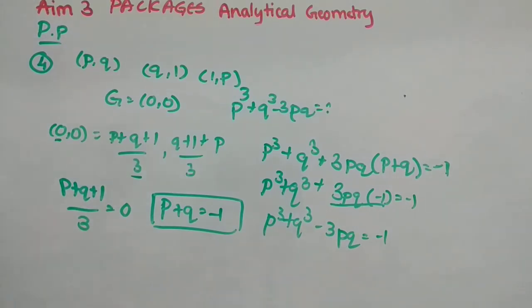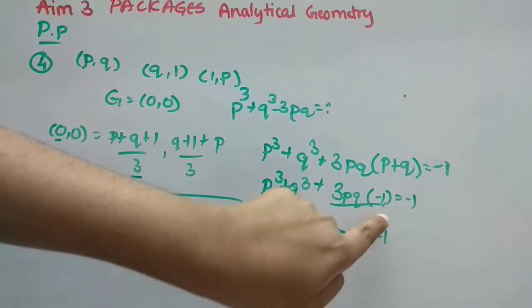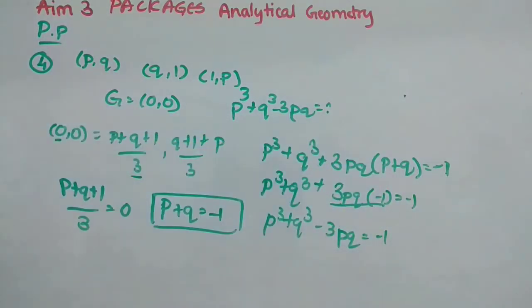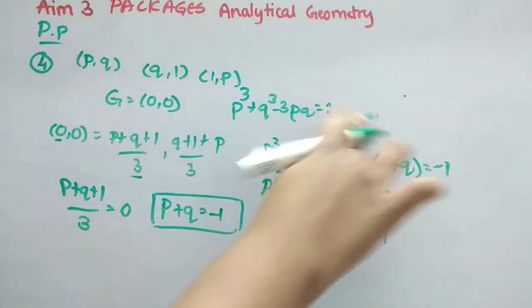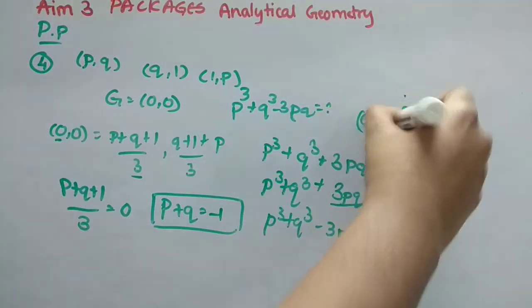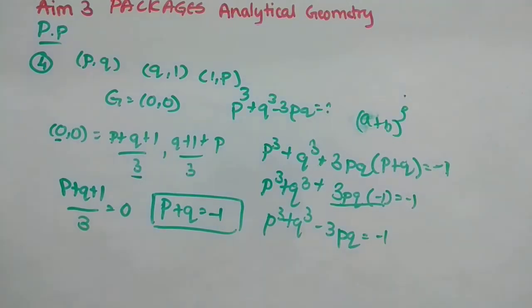Now if I, this P plus Q is minus 1 equal to minus 1. Clear? Now, what it will make P³ plus Q³, this one will be minus, this will be multiplied with this term only, right? So this will be 3 into minus 3P³, that is equal to minus 1. That's it. So I think you understood this one. So little bit tricky they went actually.